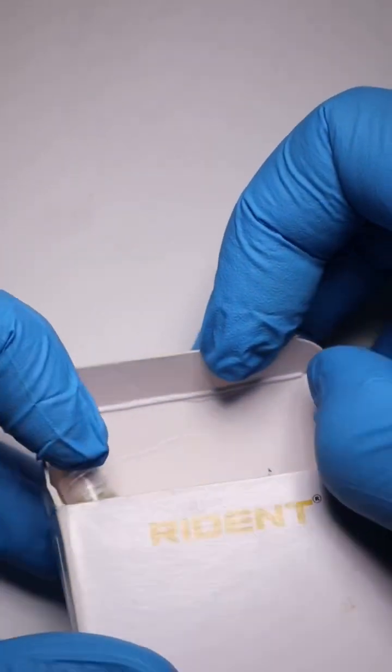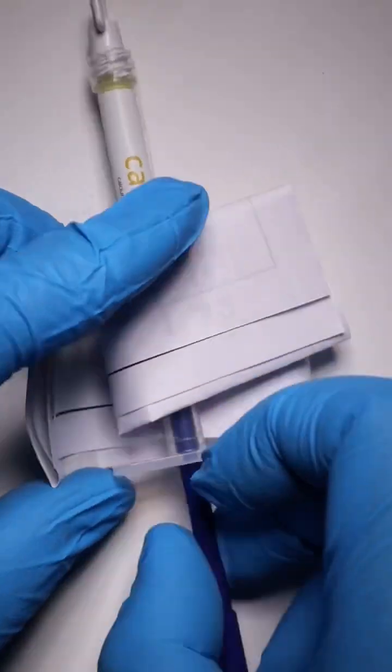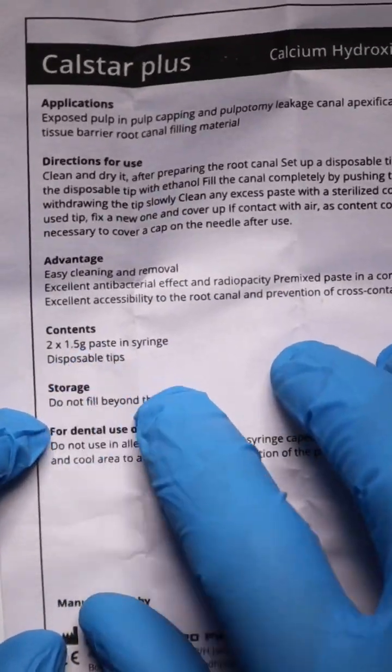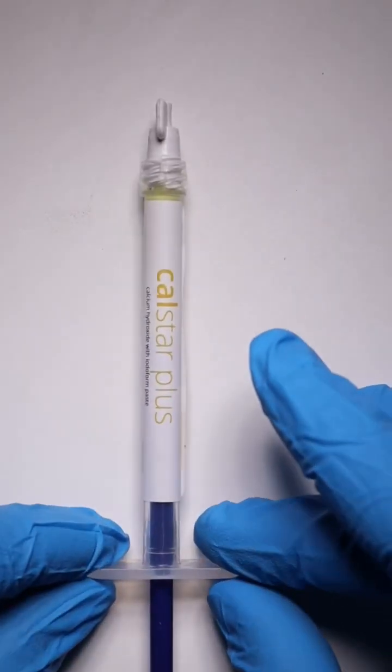There is a syringe which will be used to deliver the obturation paste and manufacturer's instructions. This is useful for pulp capping procedures called pulpotomy and is supplied in syringe form.